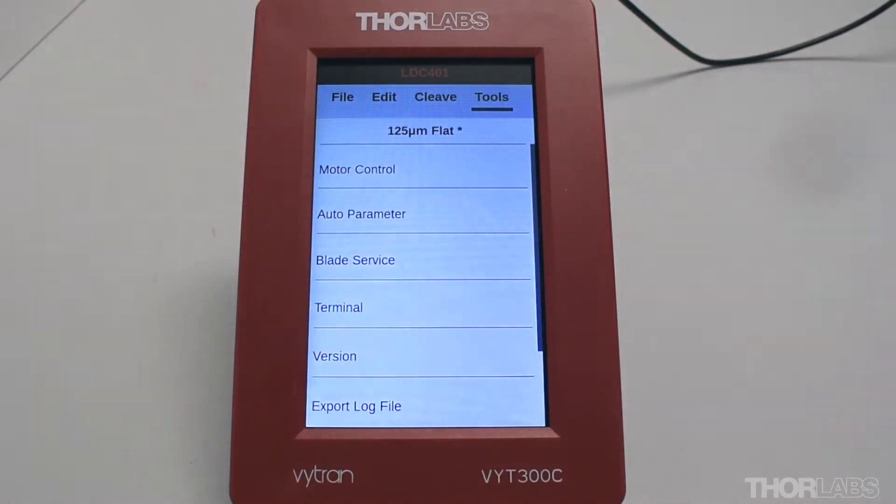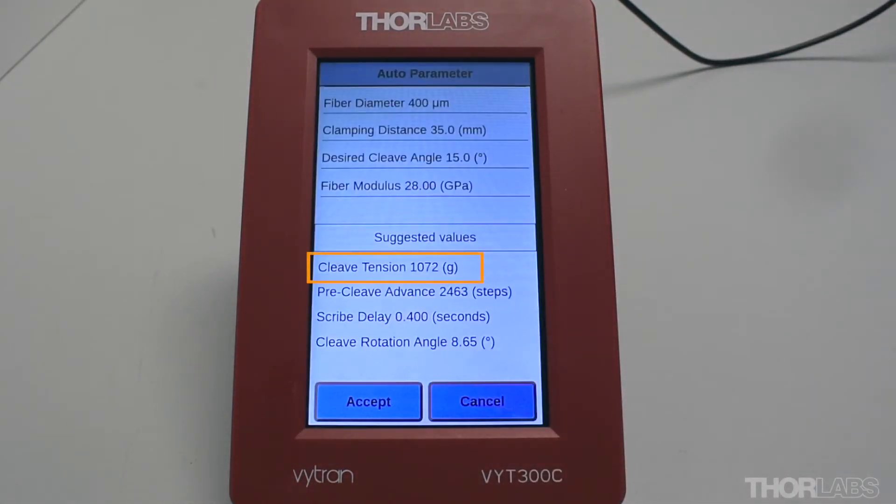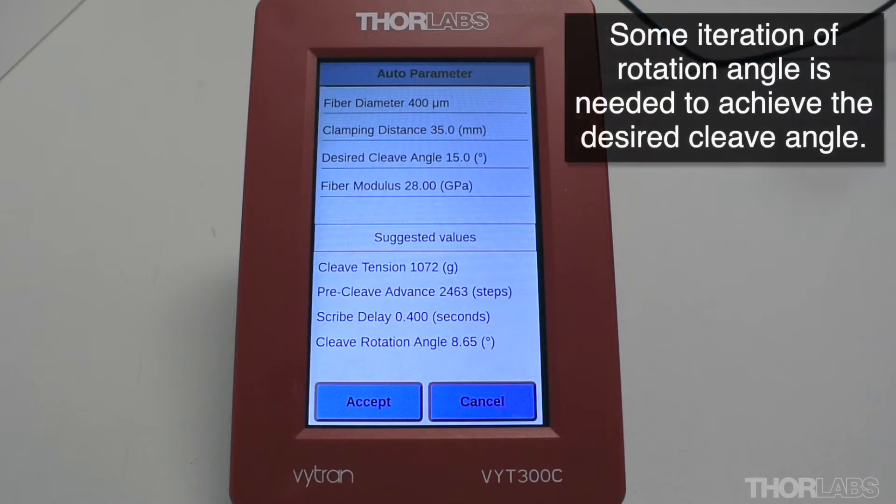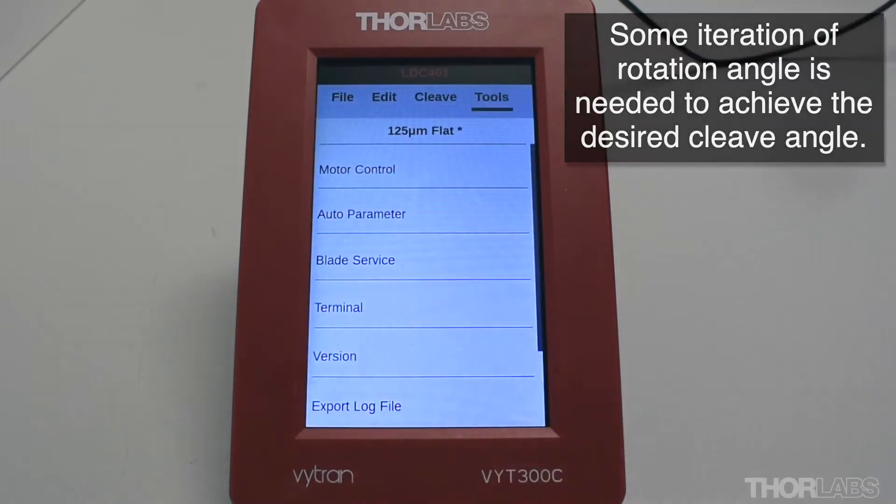Use the auto parameter tool to suggest an appropriate axial fiber tension. The controller will also determine the angle for the rotation stage required to achieve this cleave. However, it should be noted that some iteration from this suggested starting value may be required, especially for large cleave angles.